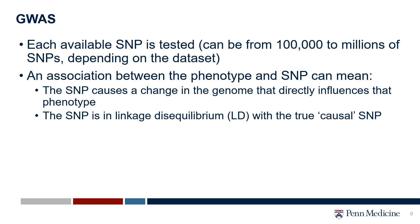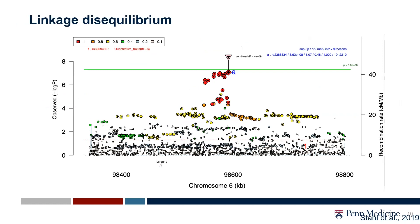We test each available SNP — this can be 100,000 to millions of SNPs; some recent studies have looked at around 20 million SNPs. If we see an association between a phenotype and a particular SNP, it can mean that the SNP causes a change in the genome that directly influences the phenotype. For example, there's a SNP in ADH1B, an alcohol dehydrogenase, that changes the protein produced and makes it less able to break down alcohol.